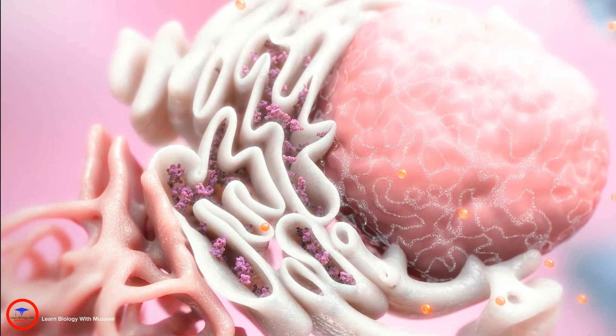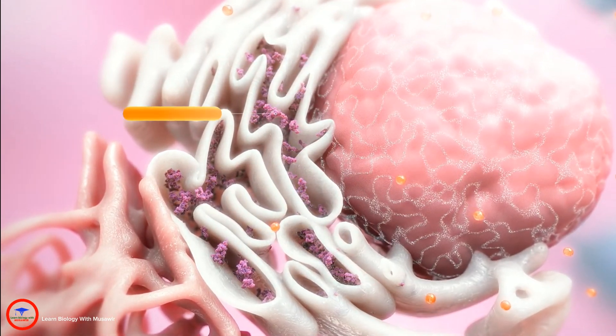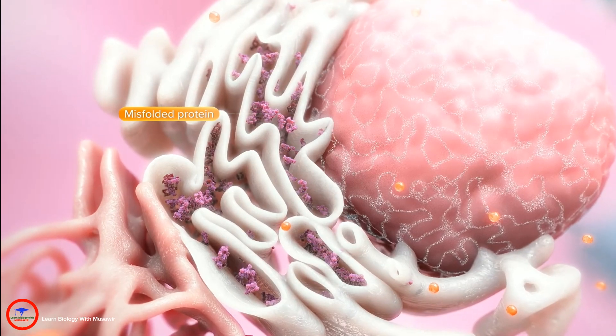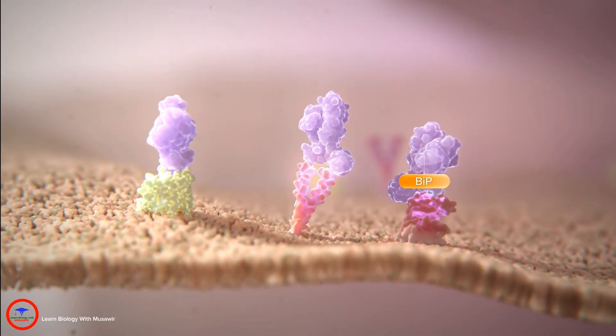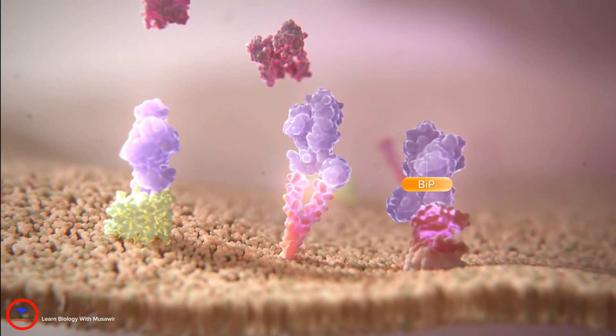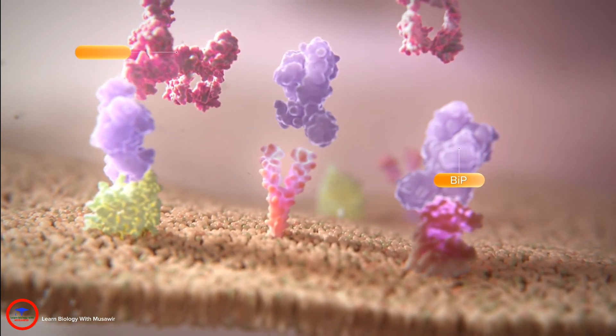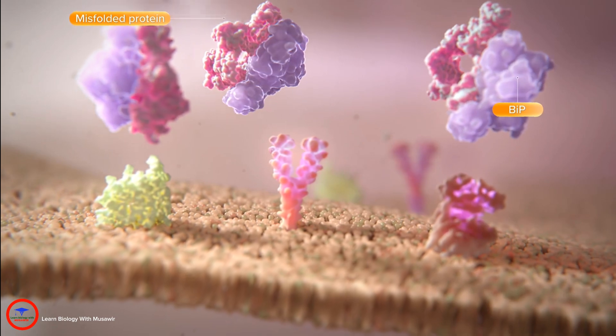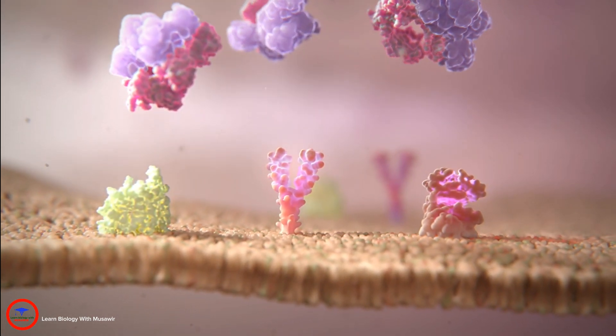Precise folding is essential to protein function but errors can lead to misfolded protein overload in the ER. When mistakes occur, the unfolded protein response reduces protein synthesis and removes misfolded proteins until normal synthesis can be resumed.